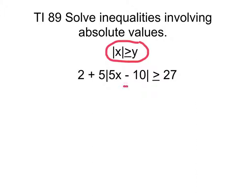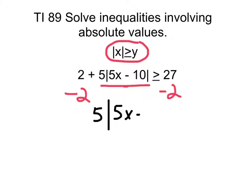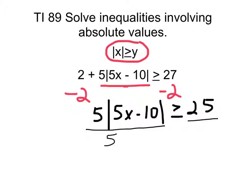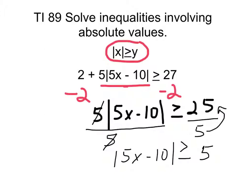First thing you want to do is isolate the inequality. So we will take a minus two on both sides. That will give us five times the absolute value of 5X minus 10, and it is greater than or equal to 25. Now divide both sides by five. These fives cancel, and now we have the absolute value of 5X minus 10 is greater than or equal to five, because five goes into 25 five times.